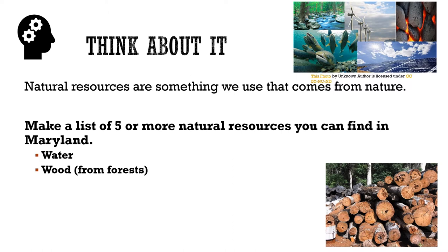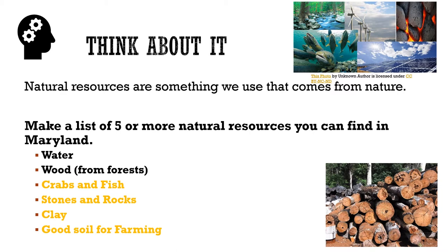You may still be writing and that's okay, but we're going to keep going. Maybe you wrote down something like crabs and fish — Maryland is known for seafood, with lots of crabs and rockfish. We also have different stones and rocks, clay in our soil, good farmland soil on the way to Ocean City, and wildlife like deer. Maryland is really unique, but just like other states, we depend on each other because of our differences.